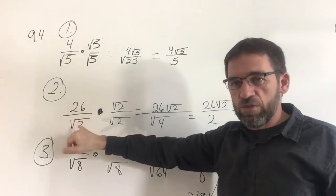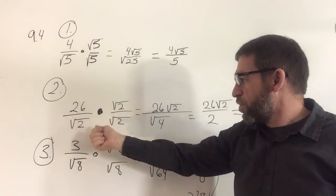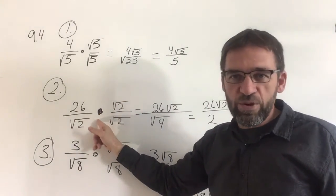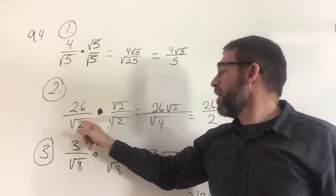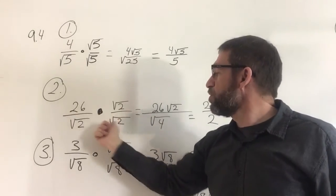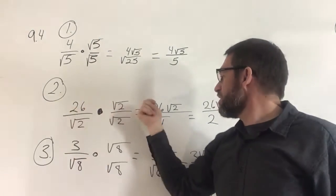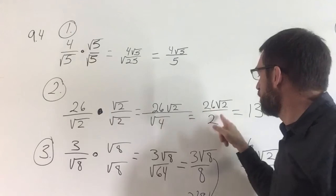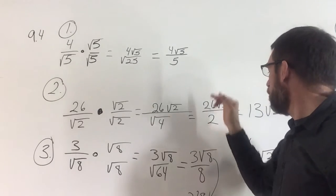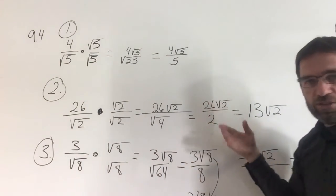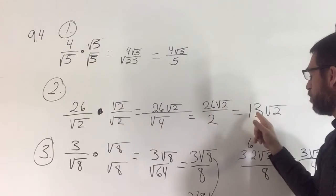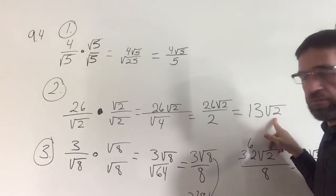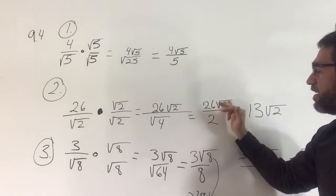Number two doesn't work the same way. You have 26 over 2². You want to square this number, so always look at the denominator and ask: what do I have to multiply it by to get it squared? Two times two gets you squared. So two times two makes four; two times 26 makes 26 radical 2. The square of 4 is 2, so you can drop the radical sign on the bottom. Two goes into 26 making 13, so we get 13 radical 2.